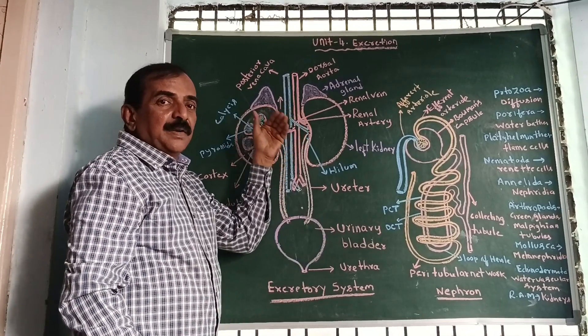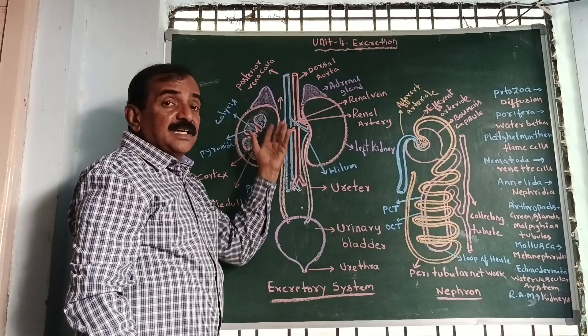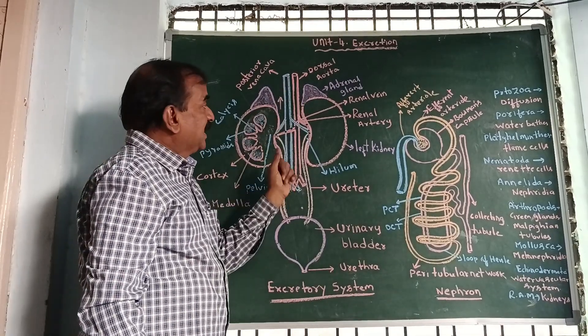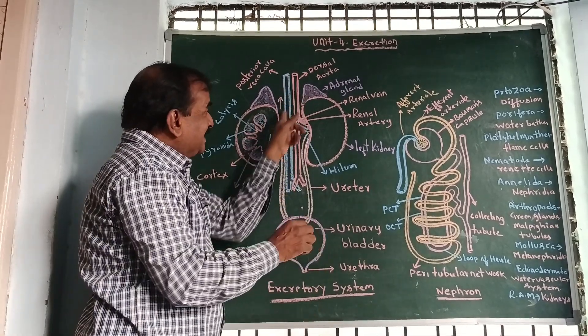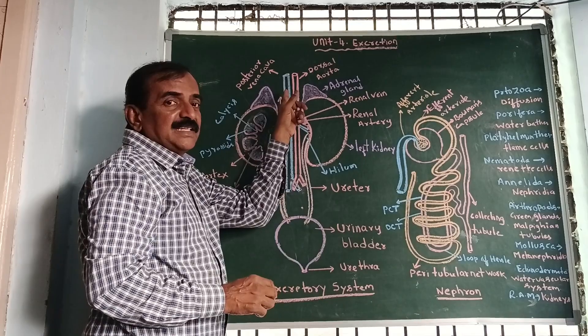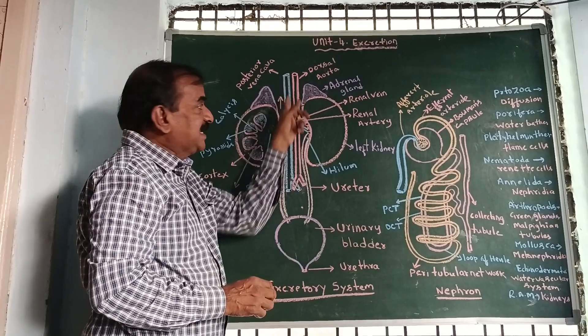It is deoxygenated blood, and it exits from the hilum of each kidney.